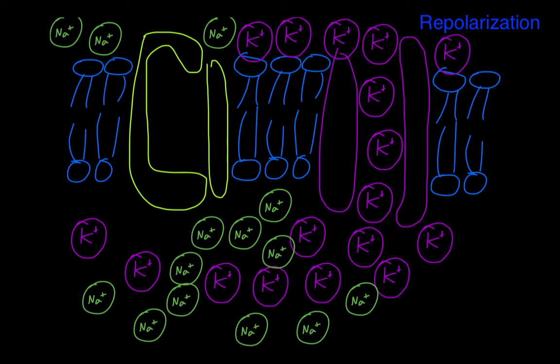Potassium channels start to open up and ions start to diffuse across the membrane, and the sodium channels start to close.